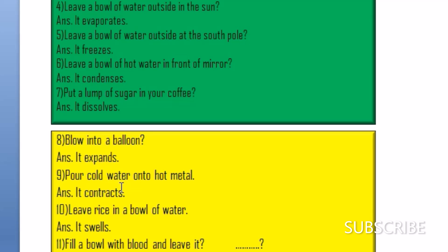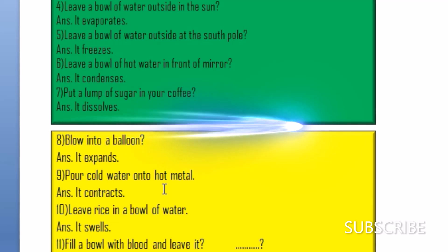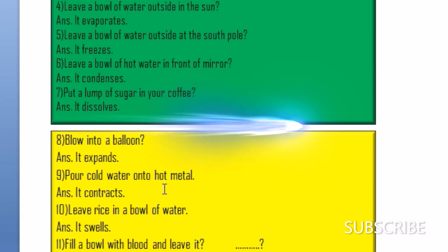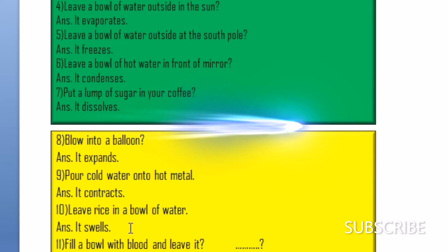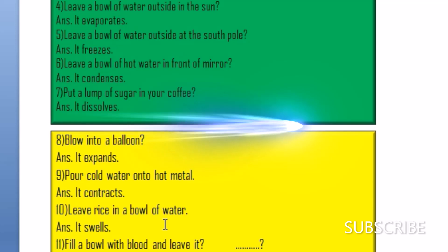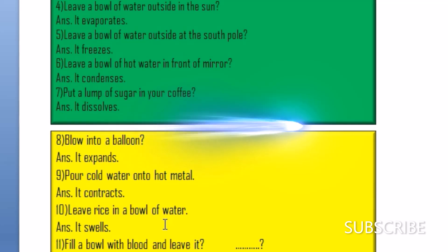Question nine: what happens when you pour cold water onto hot metal? It contracts. The word we use to denote pouring cold water onto hot metal is 'contracts.' Question number ten: what happens when you leave rice in a bowl of water? It swells. When we leave rice in a bowl of water, it obviously swells.